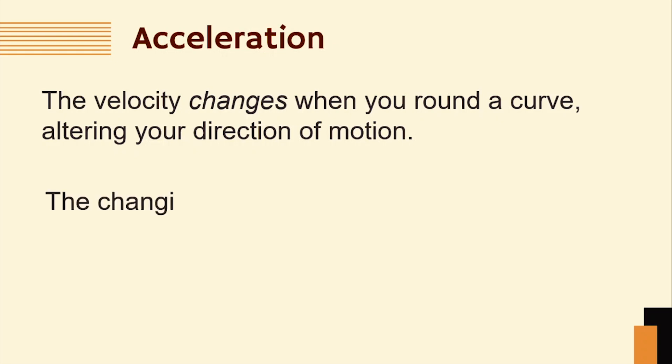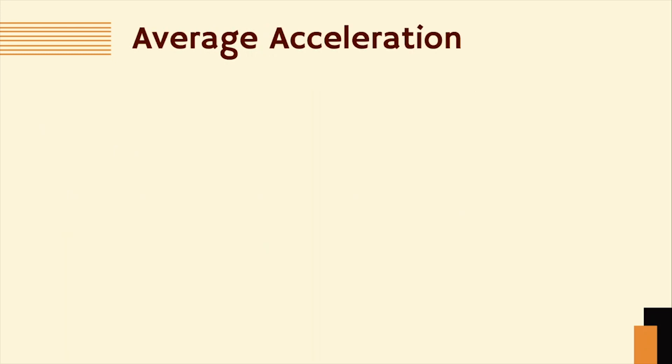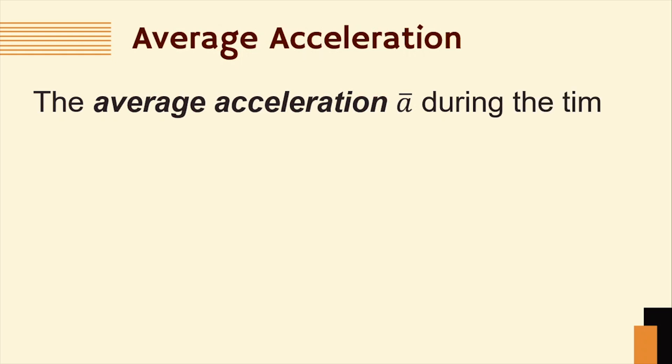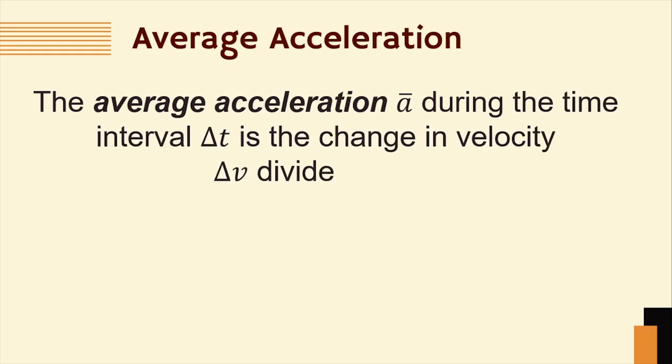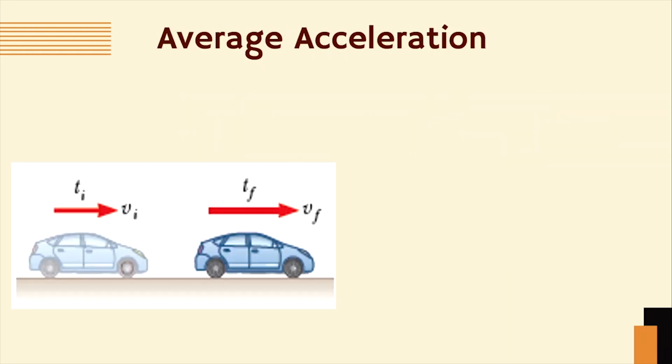The changing of an object's velocity with time is called acceleration. The average acceleration during the time interval Δt is the change in velocity Δv divided by Δt. Mathematically, that is, average acceleration equals final velocity minus initial velocity divided by final time minus initial time.